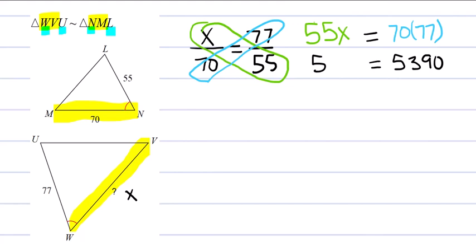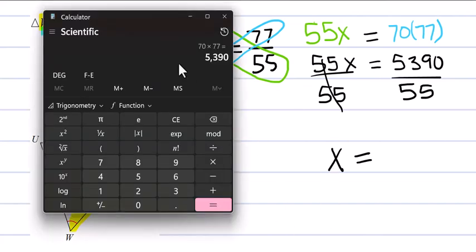On this side it's 55X and we're trying to solve for that unknown. So let's divide both sides by 55. 5390 divided by 55 is 98. And we're done.